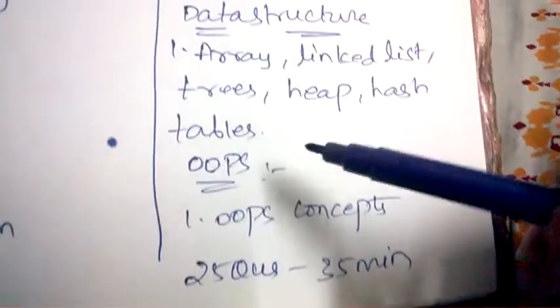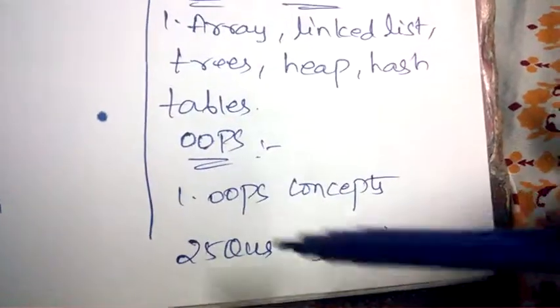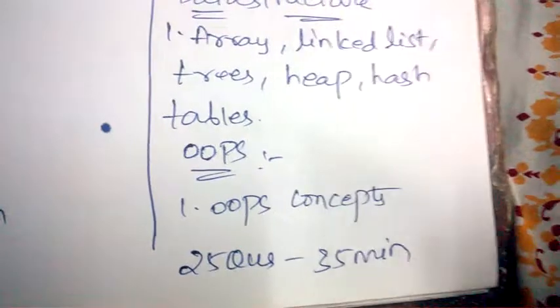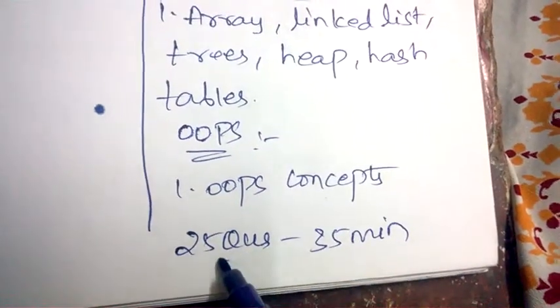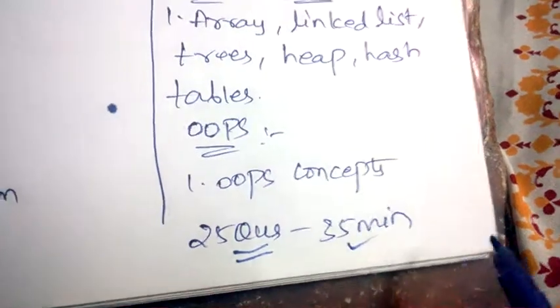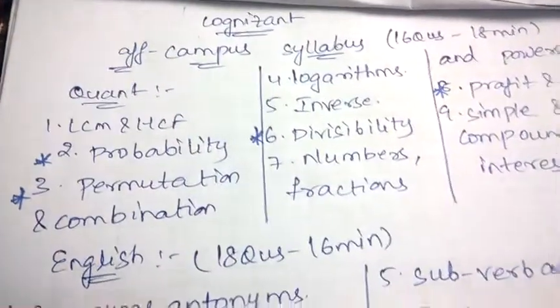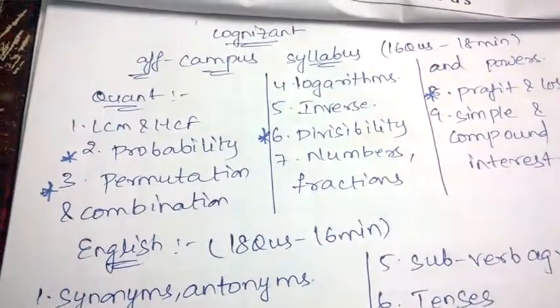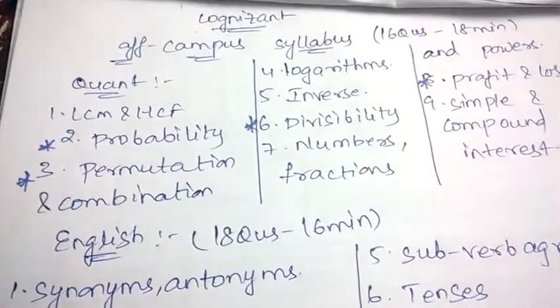From OOPs, OOPs concepts will be asked and you'll be asked 25 questions from programming and you'll be given 35 minutes to solve those questions. These are the exam patterns of Cognizant for both off-campus and on-campus.